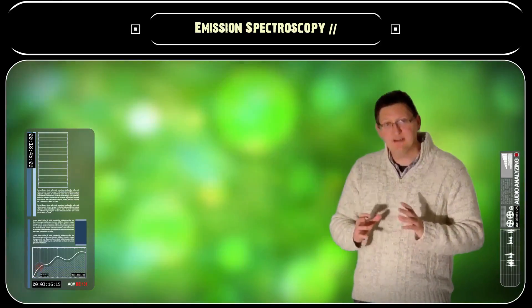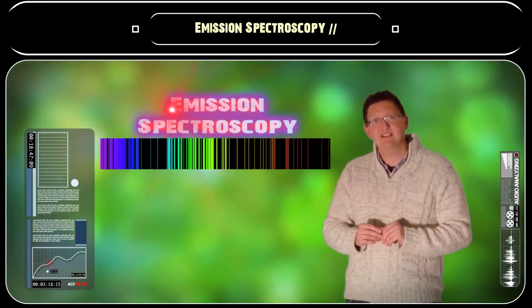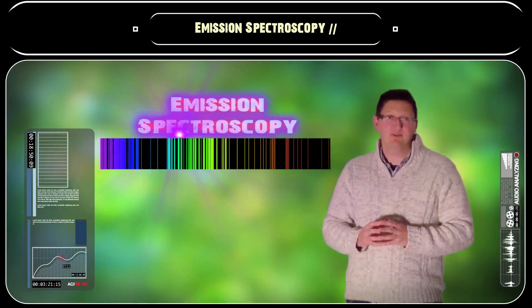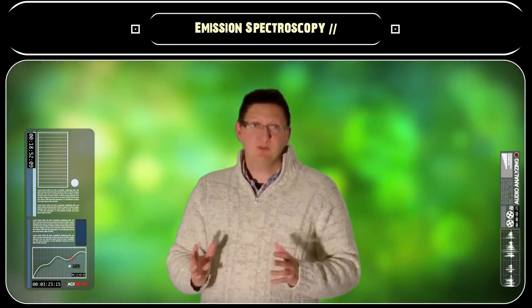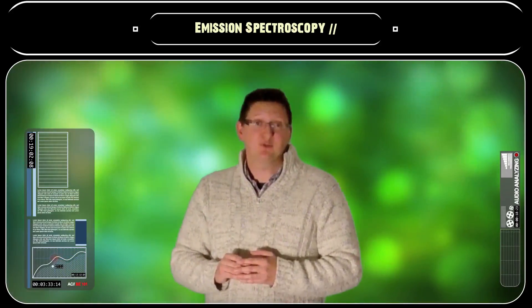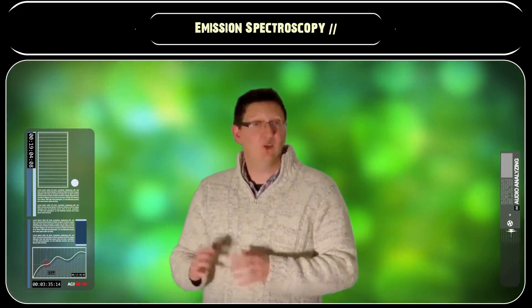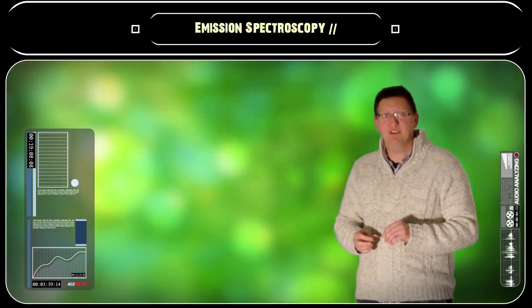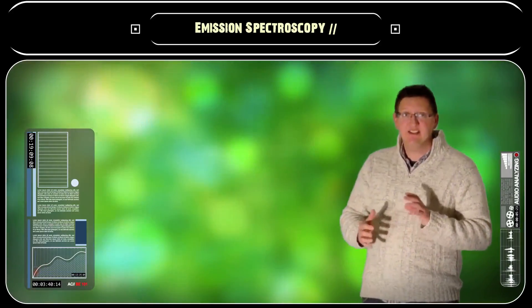And when we study the emission of light from matter, it is called emission spectroscopy. Spectroscopy is not just limited to the visible region of the electromagnetic spectrum, nor is it limited to the absorption or emission of light when electrons are promoted or demoted between electron shells. A good example of this is infrared spectroscopy.